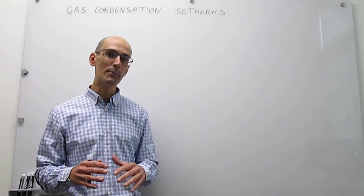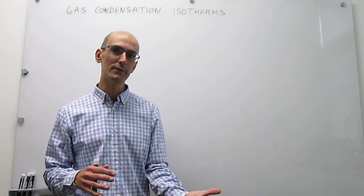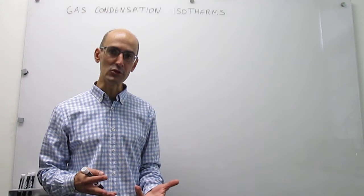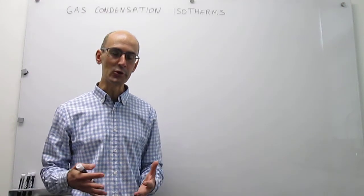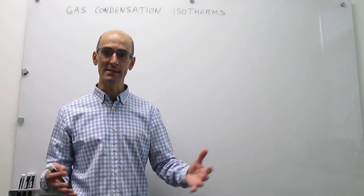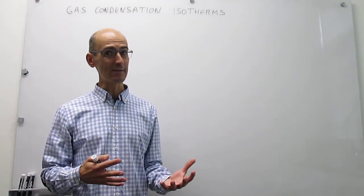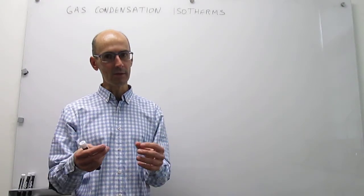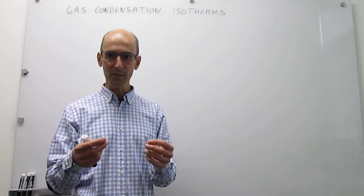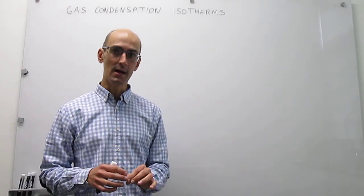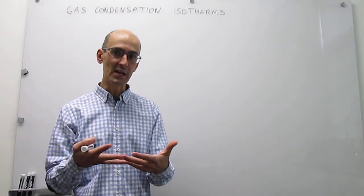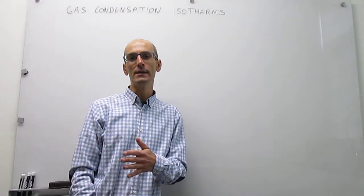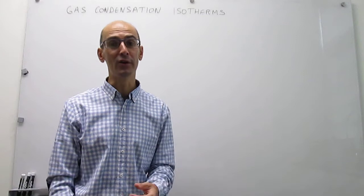In this video we are going to approach the phenomenon of interactions between gas particles from a different perspective: the concept of condensation. Condensation is something we observe every day when a gas turns into a liquid, and it turns out that is actually a deviation from ideality. The reason you get condensation is that at some temperature the attractions between gas particles are much stronger than thermal motion, so those particles coalesce into a liquid. Condensation is really a demonstration of non-ideality.